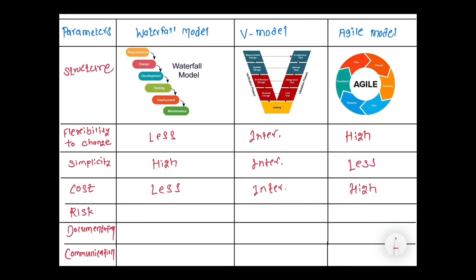Here we will see risk from the customer's point of view. In the waterfall model, the customer can't introduce new changes, that's why we can say it is a very highly risky model. In V model, there are some chances to introduce some change, so we can call it an intermediate risky model. Whereas in agile model, we can introduce change at any stage, that's why this model is called a very less risky model.